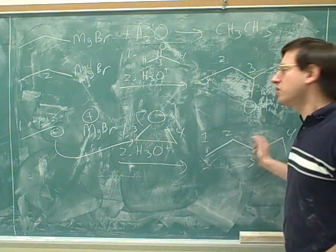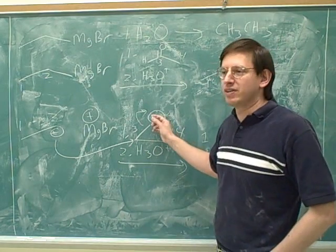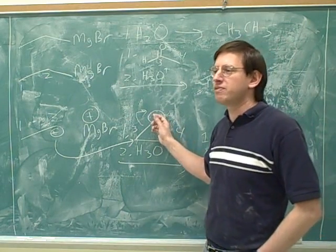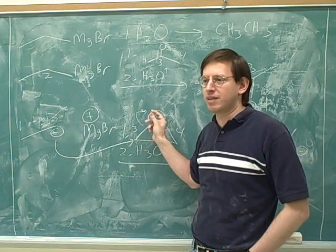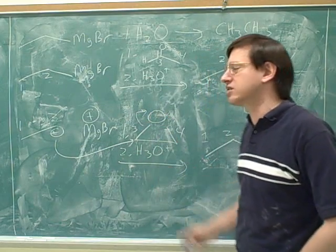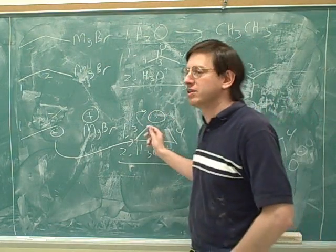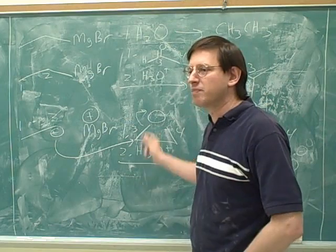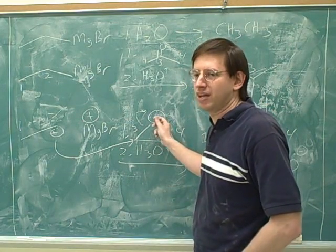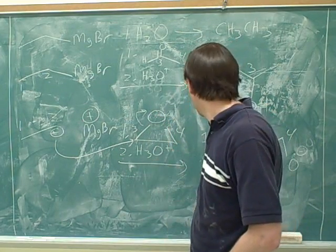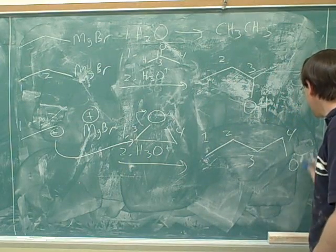And that's what happens here. It's so eager to open that it's willing to do that with a bad leaving group. Even when there's an exception, we should be able to understand why we have that exception. This is a case where we can have a bad leaving group as the O⁻ to get rid of the strain. But the general rule still holds — in most cases, you can't have a neutral oxygen as a leaving group. And we ended up protonating this.